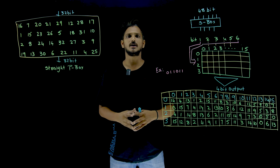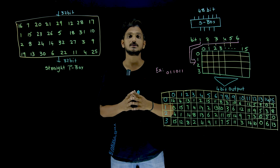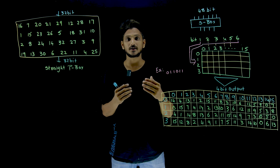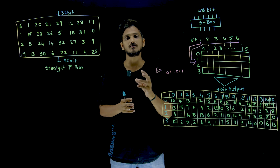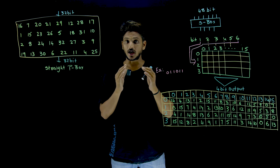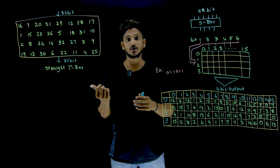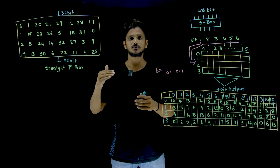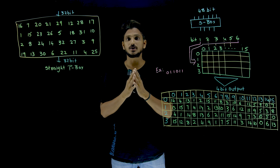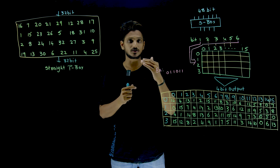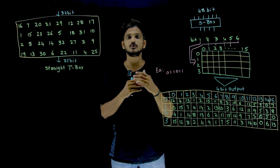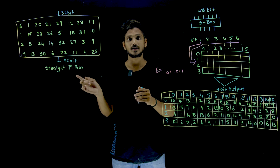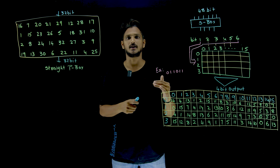Hi, welcome to Learning Monkey, I am Raghu here. In this class, we will discuss about S-Box and P-Box that are present in our DES Feistel function. This is a continuation class. In our last class, we clearly discussed about the expansion box and exclusive or operation. We mentioned that after completion of exclusive or operation, the output which we are going to get is 48-bit output. Please watch our previous class and come back here.